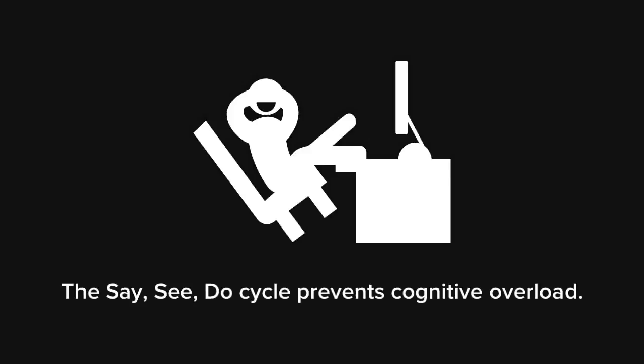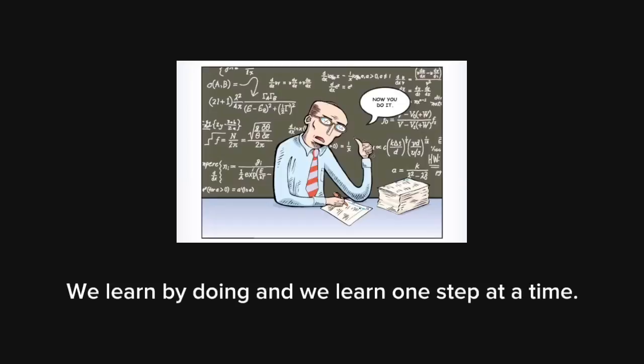The simple cure for cognitive overload is to process one chunk of information before you unload the next chunk. This happens naturally as you go through a say, see, do cycle. We already know that we learn by doing and that we learn one step at a time. Put these two notions together and you get a simple yet powerful model for the process of skill building.